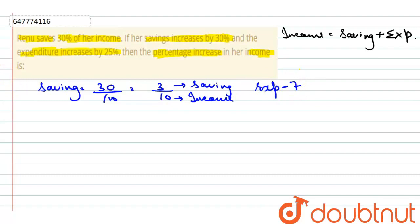Now, according to the question, saving increases by 30%. So, we can write it as 30% of 3 plus expenditure increases by 25%. So, 25% of 7 is equal to x% of 10. Here, x is the percentage change in income.